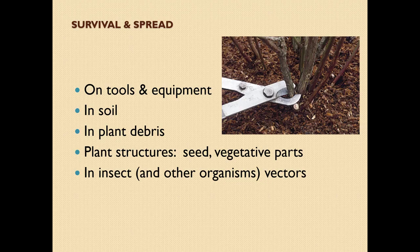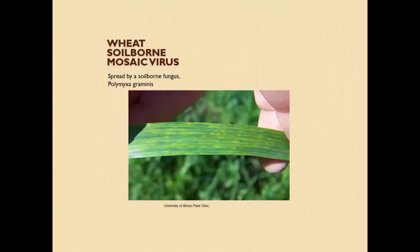Survival and spread can happen on tools and equipment, in soil, in plant debris, plant structures, seeds, vegetative parts, and in insect and other organism vectors. Here's soil-borne mosaic virus spread by a soil-borne fungus — wheat soil-borne mosaic virus.